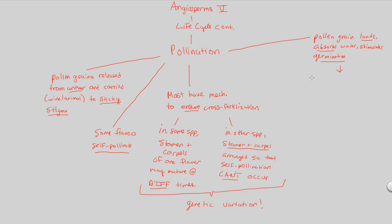The next logical step involves the tube cell, which is a part of the pollen grain. The tube cell produces the ever-so-important pollen tube. That pollen tube gets direction from the female gametophyte development because of those synergid cells that disintegrate and release chemicals to give the pollen tube a direction of growth. Now we have a pollen tube that's been formed.